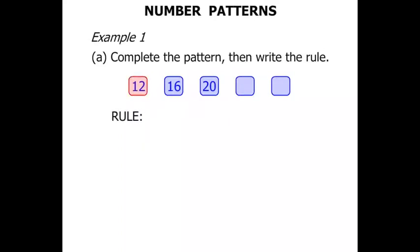Starting with 12 we are jumping up to 16. To do that we add 4. Then from 16 to jump up to 20 we also add 4. To complete the pattern let's keep on adding 4. So 20 if we add 4 we get 24. From 24 if we add 4 we get 28.